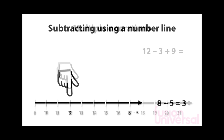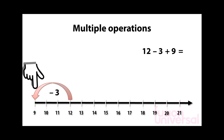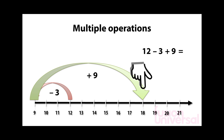We may want to carry out a string of additions or subtractions. How does the number line show us what to do? Here the calculation required is 12, take away 3, add 9. We start at 12, then move 3 to the left because we are subtracting 3. Then we move 9 to the right. We get the answer 18.